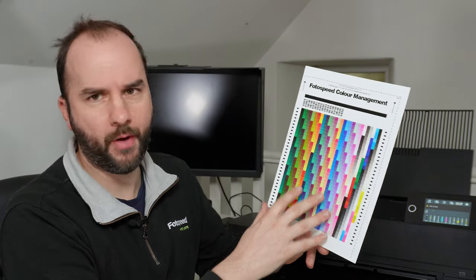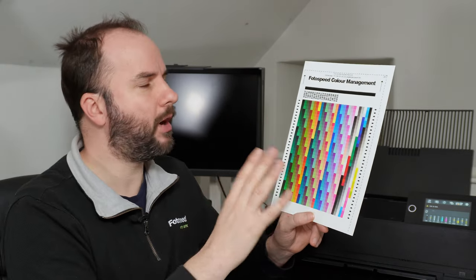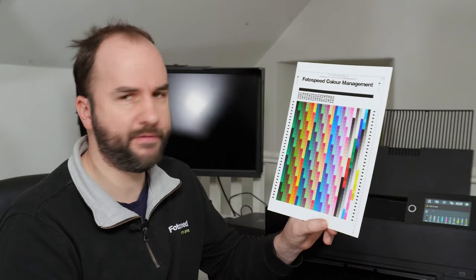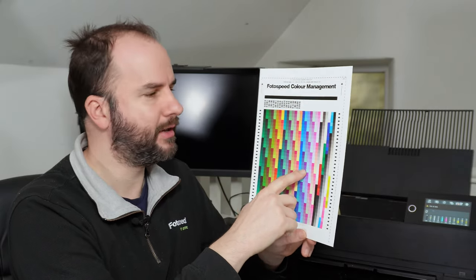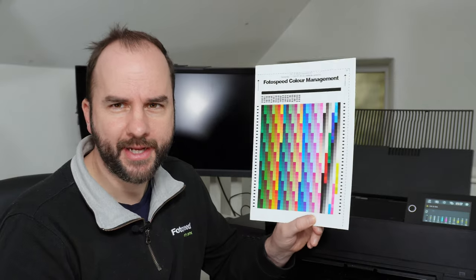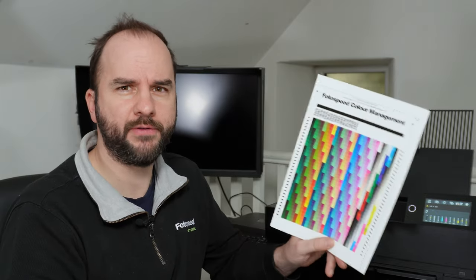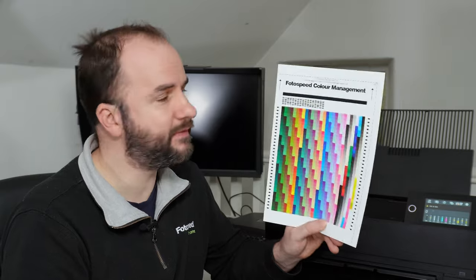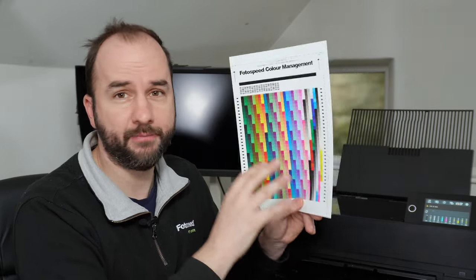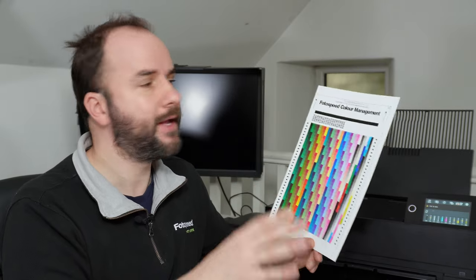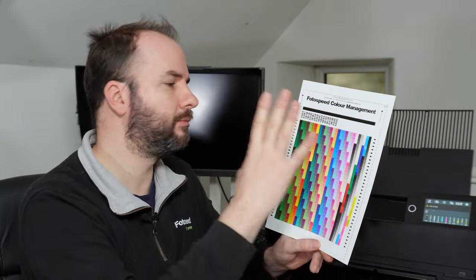What we're going to be doing is going through how we actually print this chart off — not so much what we do at our end and how we create the profile, but more about how we print this off. Because if we get this right, then our printing should be a little bit easier. A custom profile is a big step in the right direction to just being able to go File, Print, and getting great prints out of your printer. I'm going to start with the Mac and then move on to the PC.